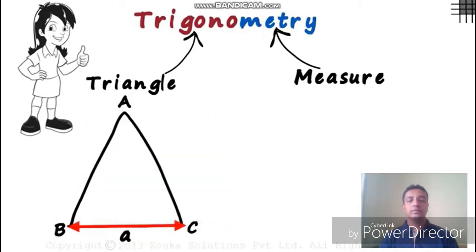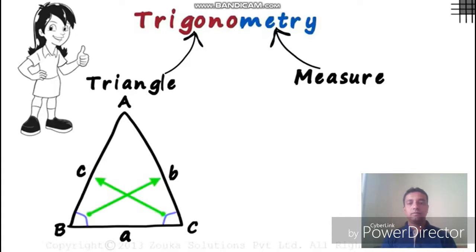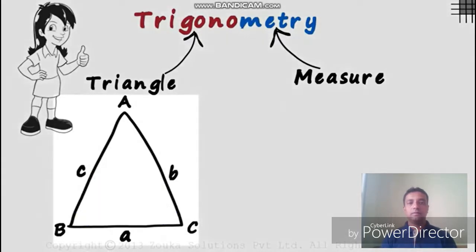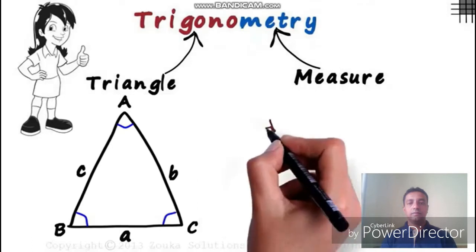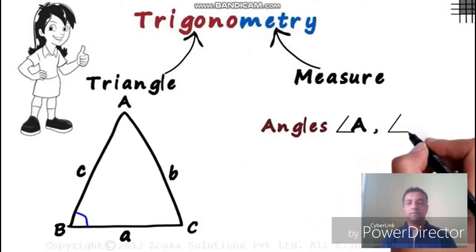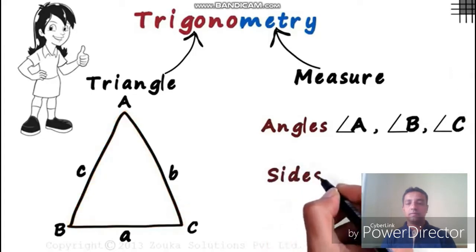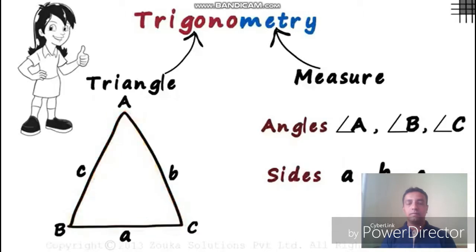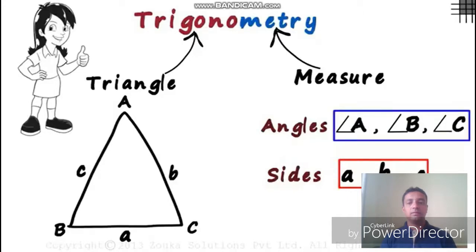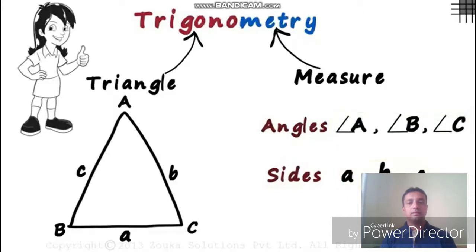Let's consider a triangle ABC. Let A be the length of the side opposite angle A, and similarly let B and C be the lengths of the sides opposite angles B and C respectively. We can measure the angles — Angle A, Angle B, and Angle C — or find the lengths of the sides, which in this case are A, B, and C. These are the only six things we deal with in trigonometry: three sides and three angles. Out of these six, we are given a few and using trigonometry we need to find the rest.